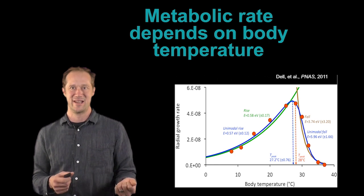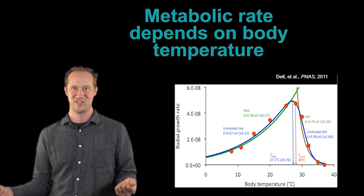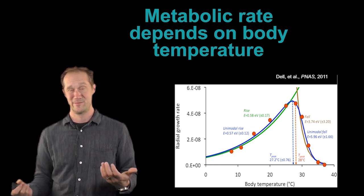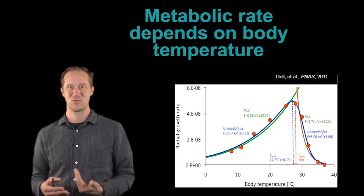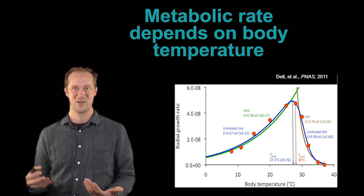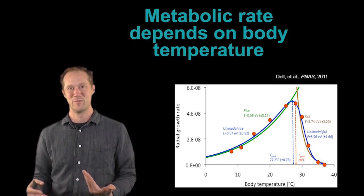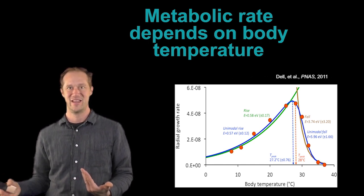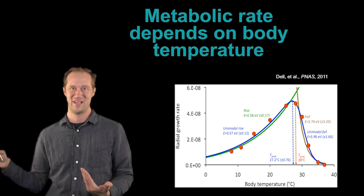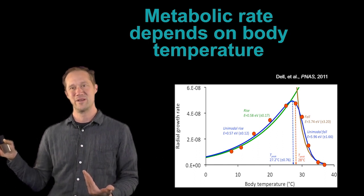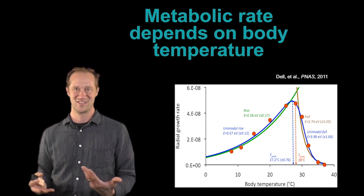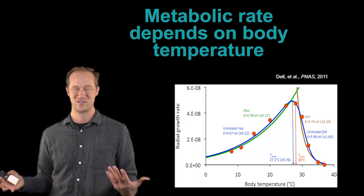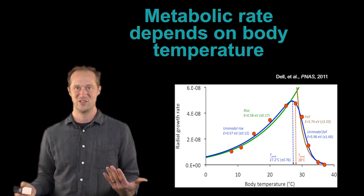And another big effector besides body size, after body size, the biggest effector of energy use across individuals is temperature. So if you look in this figure, basically the warmer something is, if you think about a frog or a turtle or a plant, the warmer it is, the faster it uses energy. And that increases at an exponential rate, so faster and faster and faster, up to the point where you get extreme temperatures and things start to fall apart and things just start to die. But up until that point or close to it, the warmer you are, the faster you use energy.